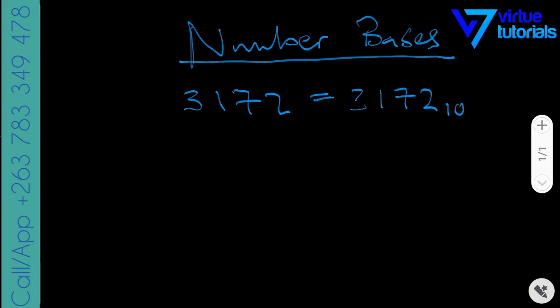That small little 10 is denoting that this number is in base 10. Now what does it mean to say a number is in base 10? It means that the number is arranged in groups of 10. If you remember from your primary school, you had units, you had tens, you had hundreds, and then you had thousands.